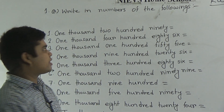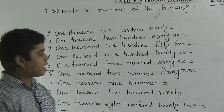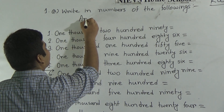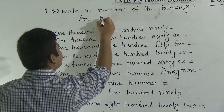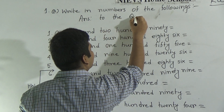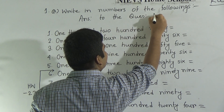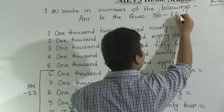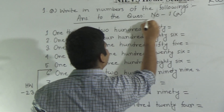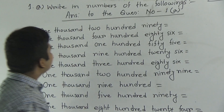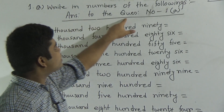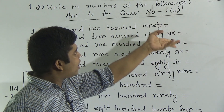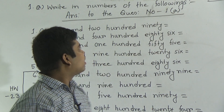Now you want to answer this question. So first of all, you write 'Answer to the question number 1' — that means answer to question number 1, then it is A. So you must write here A. After that you give a line. That means: Answer to question number 1A. I hope you have understood how to write question number 1A.